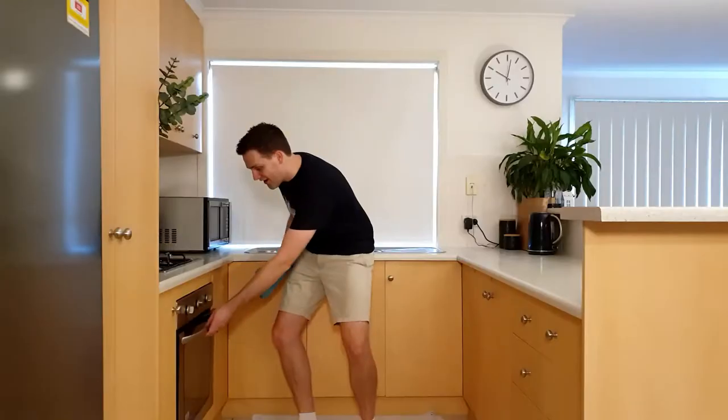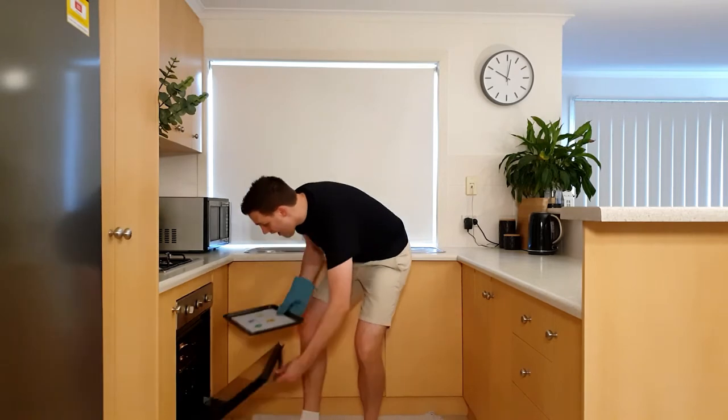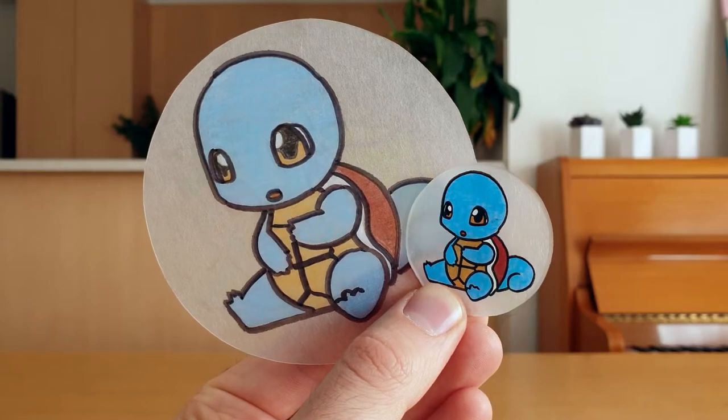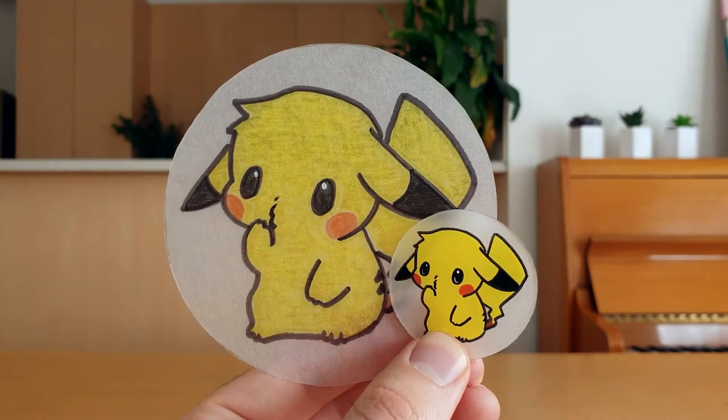Once they've shrunk, get an adult to take them out of the oven, and wait for two minutes for them to cool down. This is a before and after shot of each one. How cool do they look?